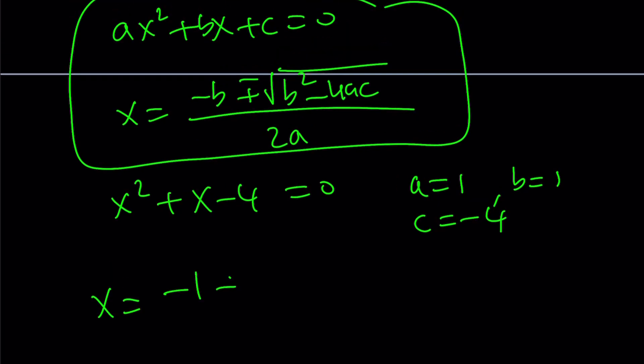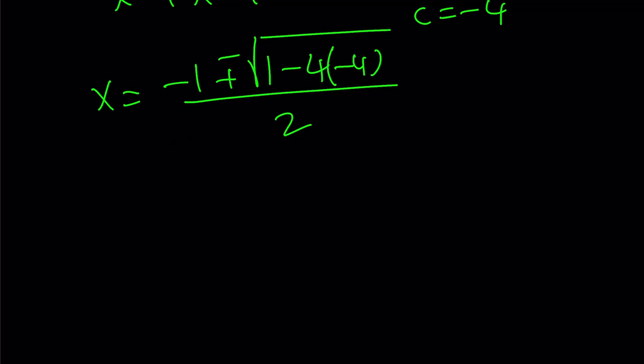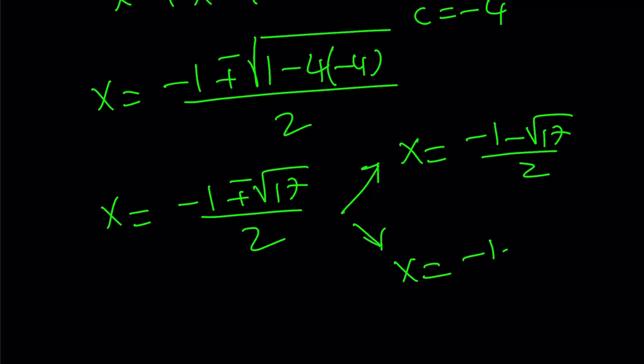So x becomes negative b, negative 1, plus minus the square root of b squared, which is 1, minus 4 times ac, which is negative 4 times 4. And that becomes a positive 16 plus 1, and that becomes square root of 17. So these are the x values. There are two x values, negative 1 minus root 17 over 2, and negative 1 plus root 17 over 2.